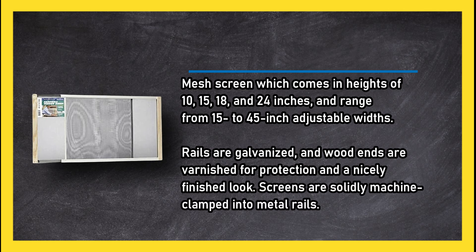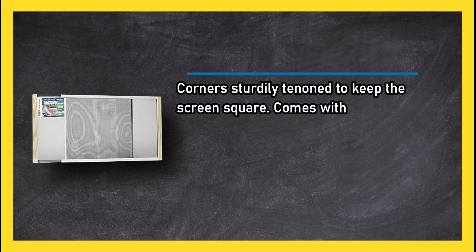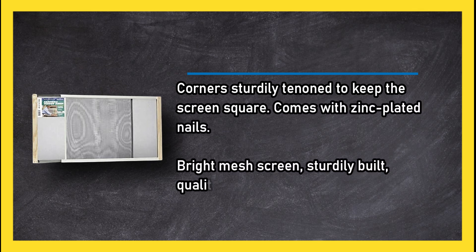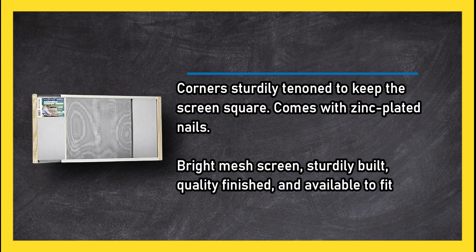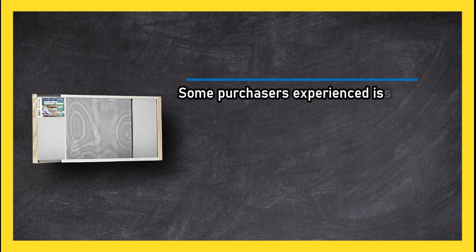Screens are solidly machine clamped into metal rails. Corners sturdily tenoned to keep the screen square. Comes with zinc plated nails. Bright mesh screen, sturdily built, quality finished, and available to fit a wide range of window sizes.